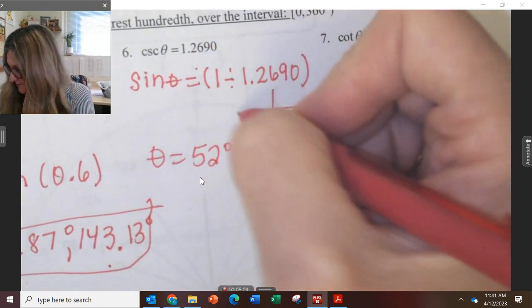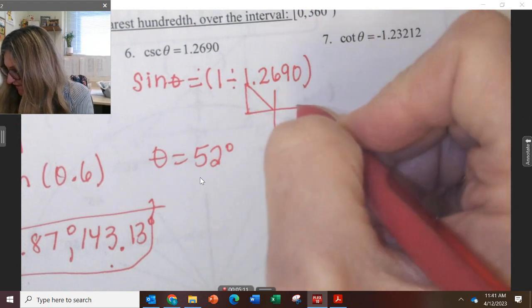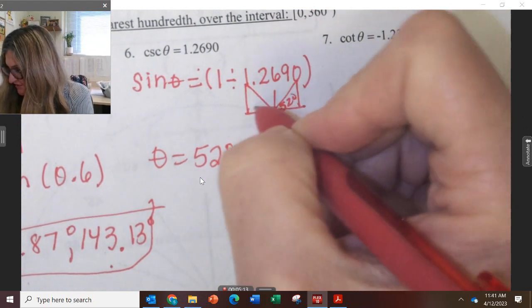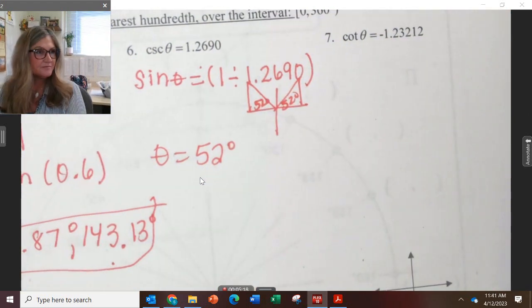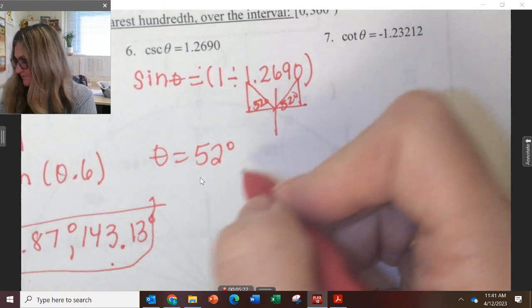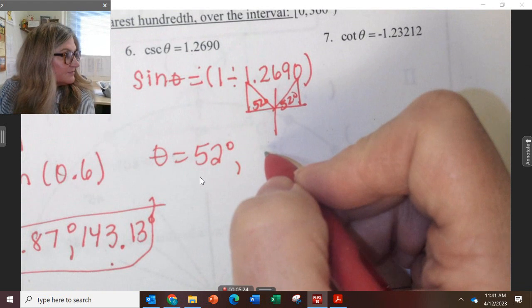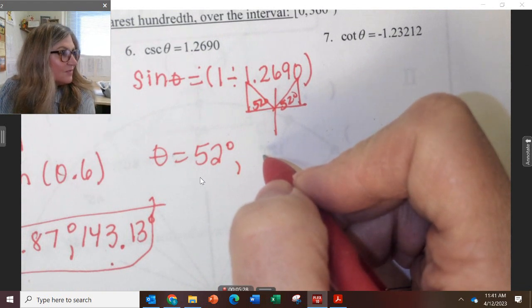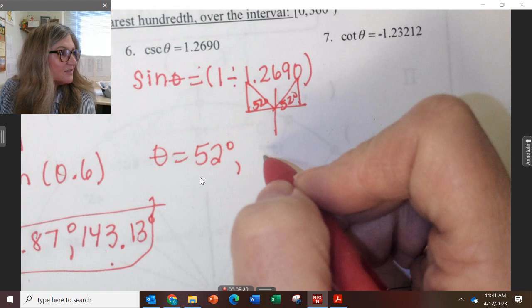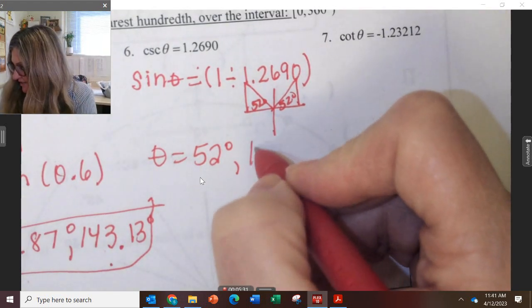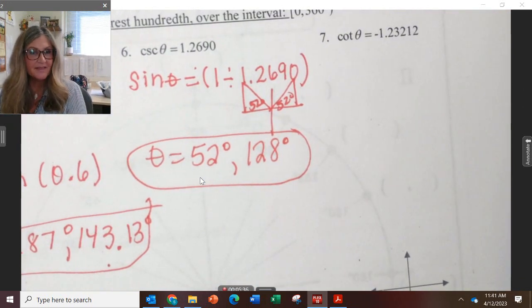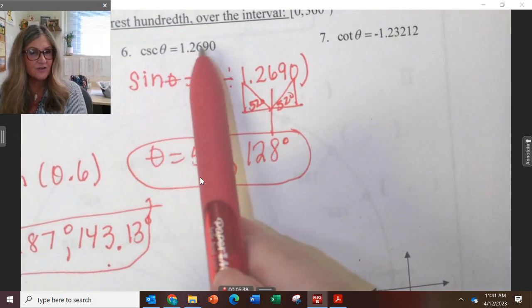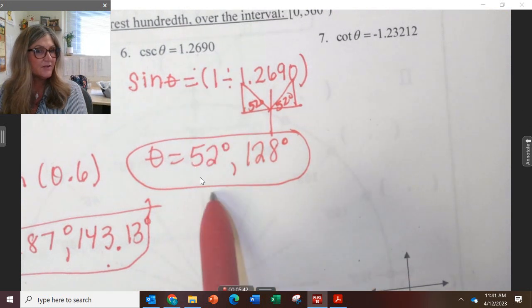But which other quadrant are we going to use besides quadrant 1? Quadrant 2. So find the answer in quadrant 2 with a 52 degree reference. What is it? 128 degrees. Good. So those are going to be the two angles that will meet that requirement of having that cosecant ratio.